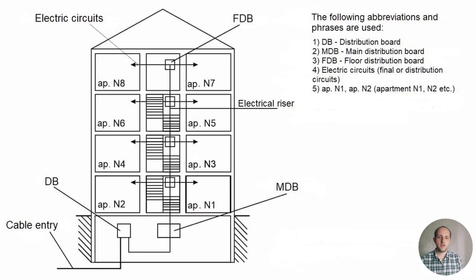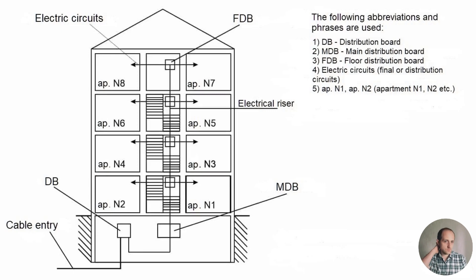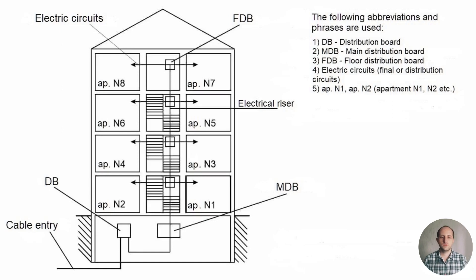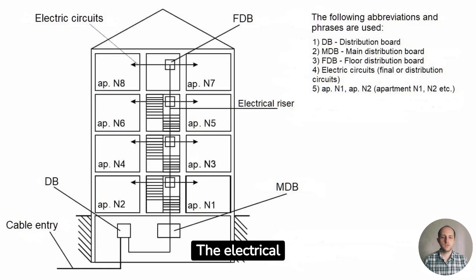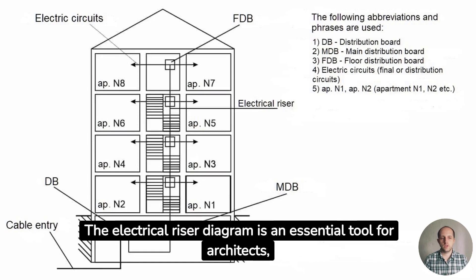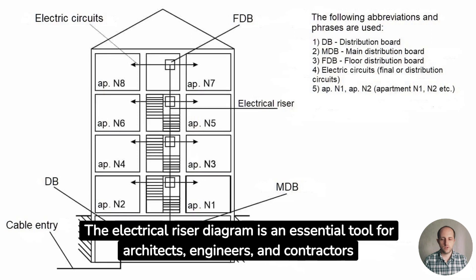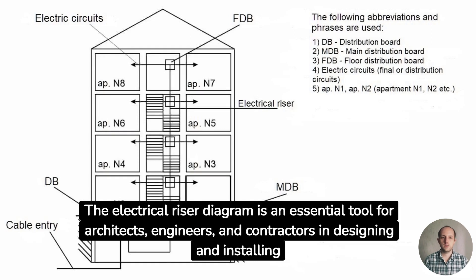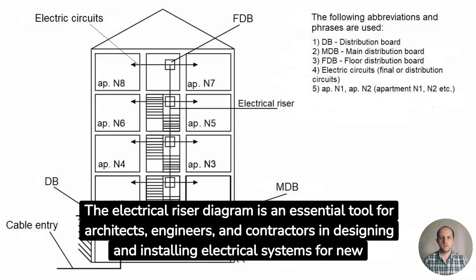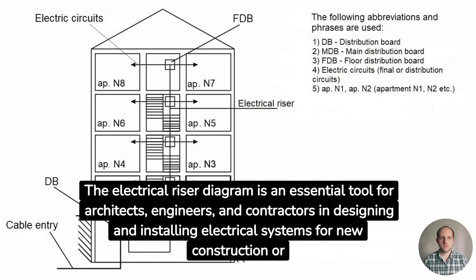The diagram typically begins at the main electrical service entrance and follows the distribution of circuits throughout the building, showing the location and type of circuit breakers, switches, receptacles, and lighting fixtures. The electrical riser diagram is an essential tool for architects, engineers, and contractors in designing and installing electrical systems for new construction or renovations.